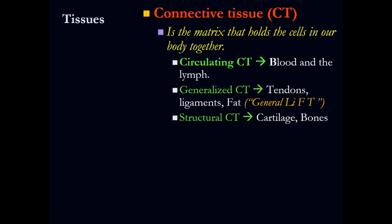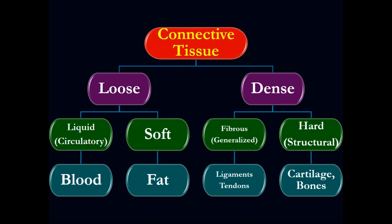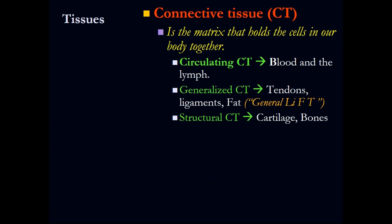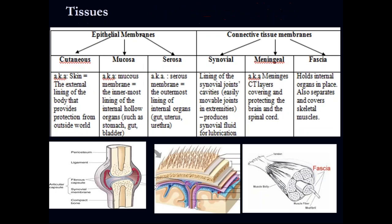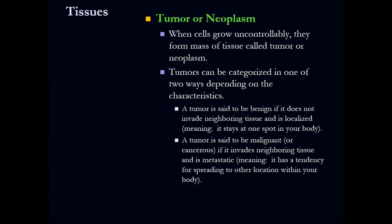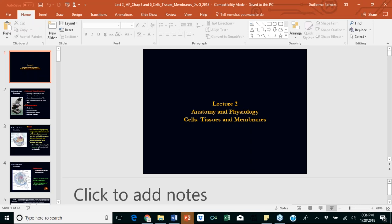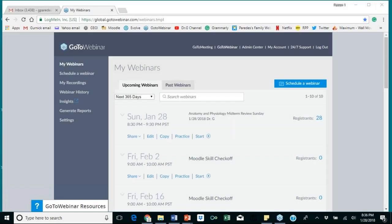For epithelium, what I want you to remember is the classification of connective tissue. Circulating means blood. Generalized includes ligament, fat, and tendons. Structural is cartilage. Regarding epithelium, remember the goblet cells — the pseudo-stratified epithelium located in the respiratory tract. That is the general overview for lecture two.